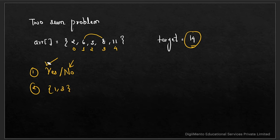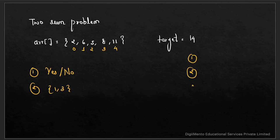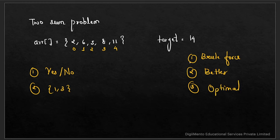Whenever you are given a problem, there are always three ways to solve it. The first is the brute force approach, the second is the better approach, and the third is the optimal approach. These are the ways you should always solve your problems.